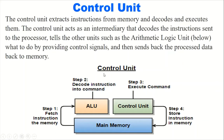The control unit performs tasks in four steps. Step one: it fetches the instruction from memory. Step two: it decodes the instruction into a command according to what you want to perform. Step three: it executes that command. Step four: it stores the result back to memory. These four steps are performed by the control unit, which is part of the CPU.